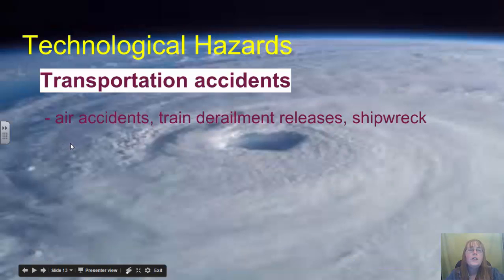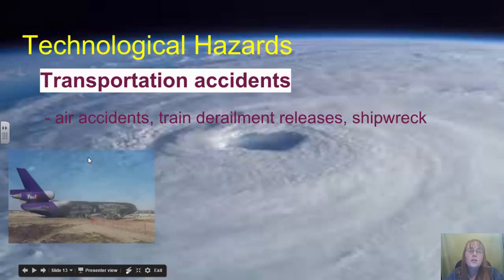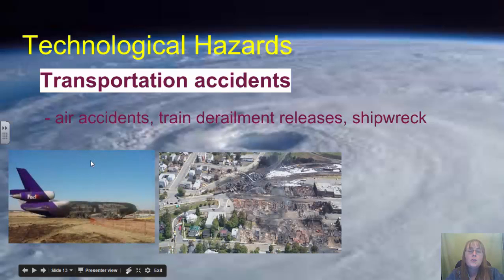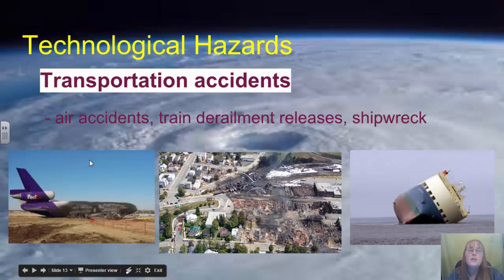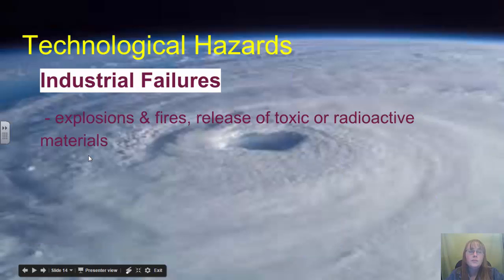Examples of technological hazard classifications: one would be transportation accidents — air accidents, train derailments, and shipwrecks are all considered transportation accidents under technological hazards.